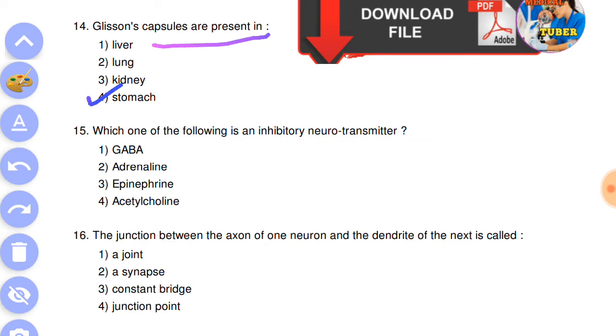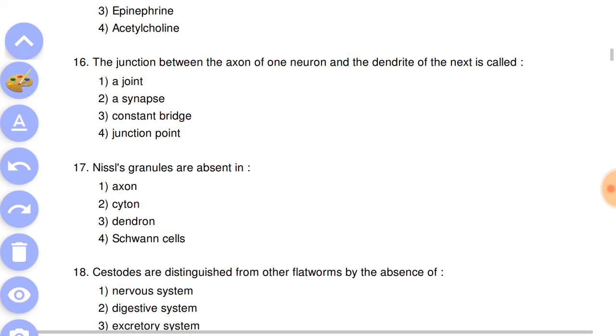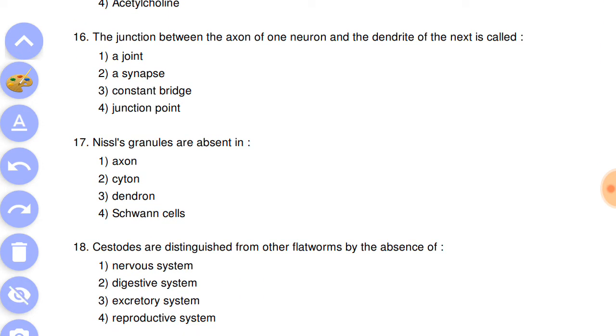Which one of the following is an inhibitory neurotransmitter? Answer is the first, GABA. Question number 16: the junctions between the axon of one neuron and the dendrites of the next is called the second, a synapse.